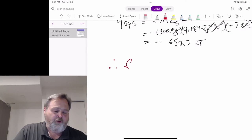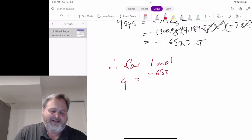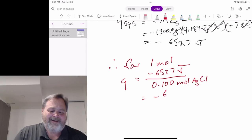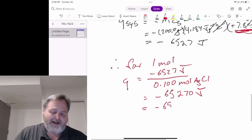Therefore, for one mole, Q would equal the minus 6,527 joules divided by the 0.100 moles of silver chloride we actually make. That's minus 65,270 joules, which to two sig figs is minus 65 kilojoules per mole.